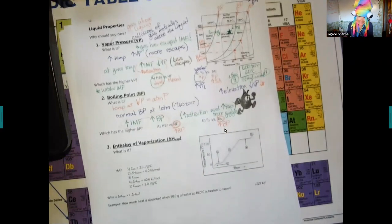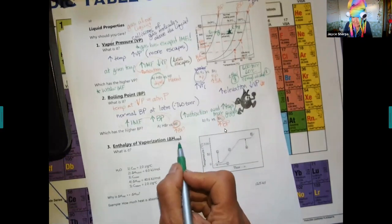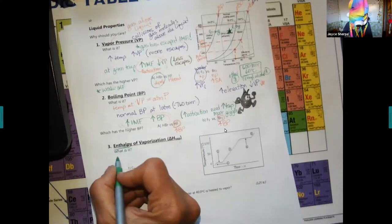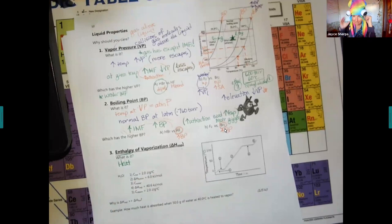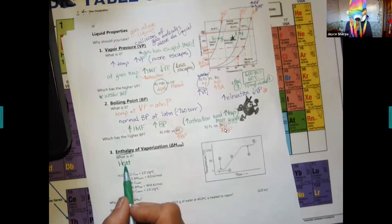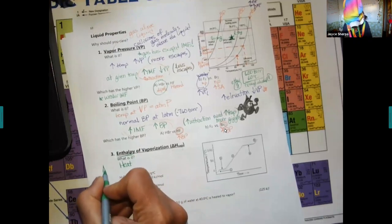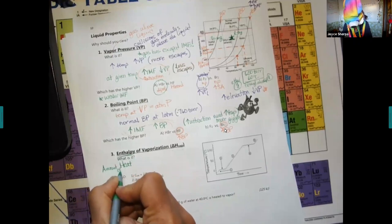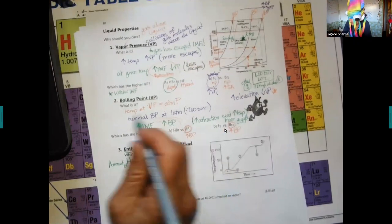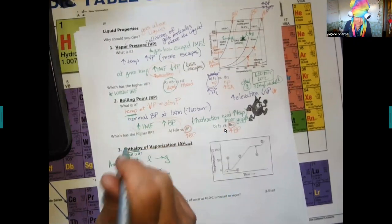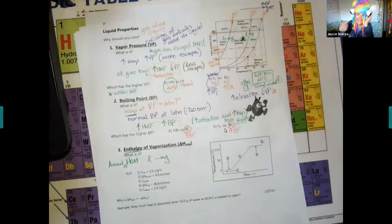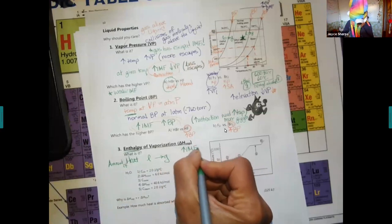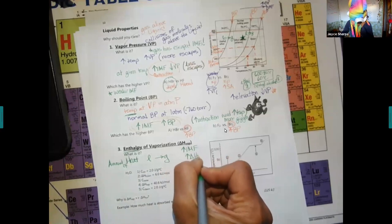The next one, delta H VAP. Remember, delta H means enthalpy. Enthalpy is a measurement of heat. We talked about this last term. If you remember the difference between heat and temperature, that's great. You can always Google it. This is a measurement of heat, the amount of heat to change the liquid into a gas. This is the temperature, which is a measurement of kinetic energy. They are both related. This is looking at it from the heat standpoint. Same relationship, stronger IMF, you need more heat, higher heat of vaporization.